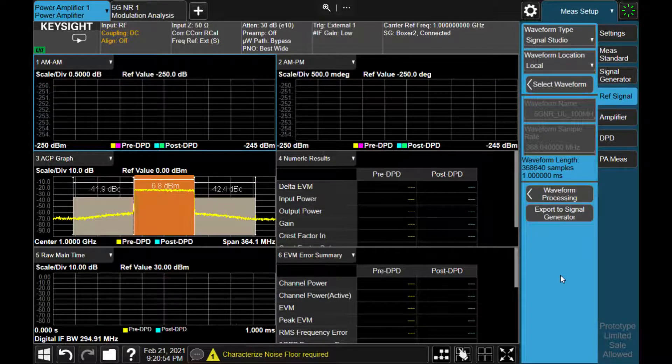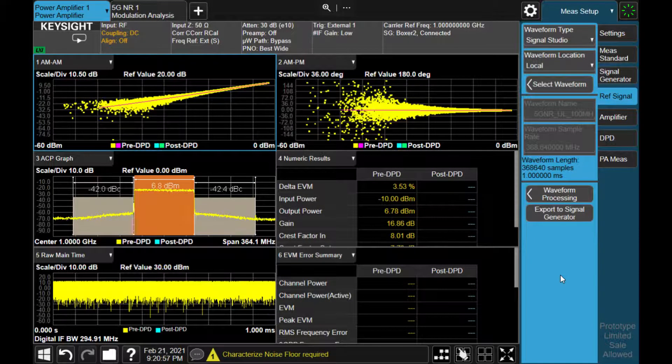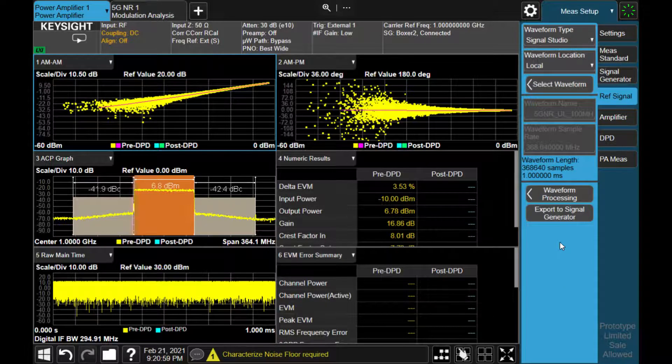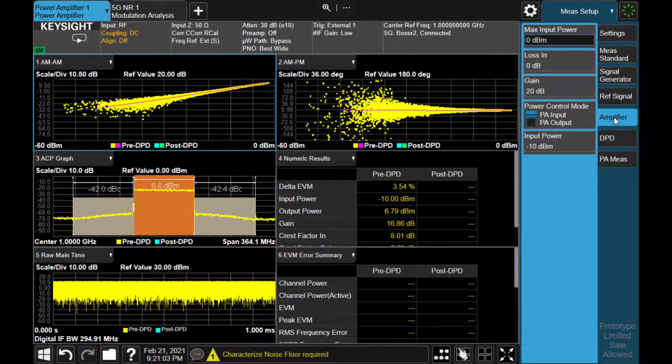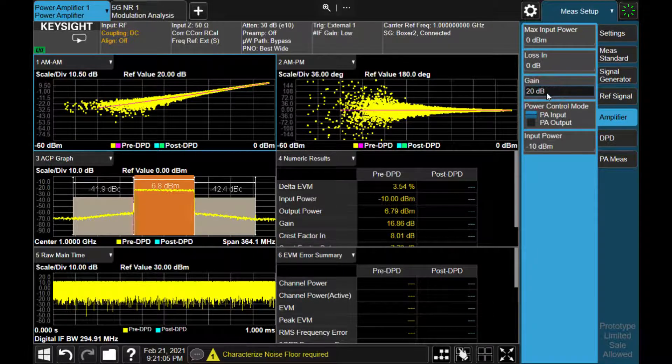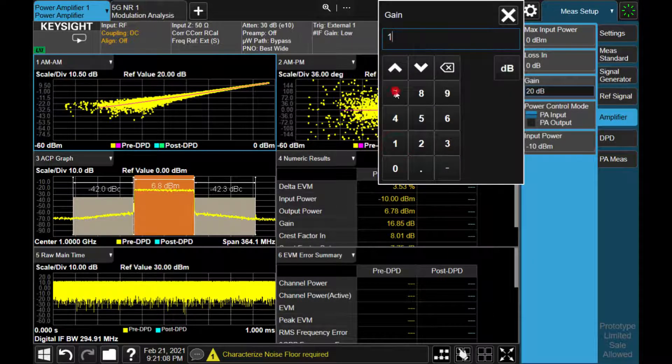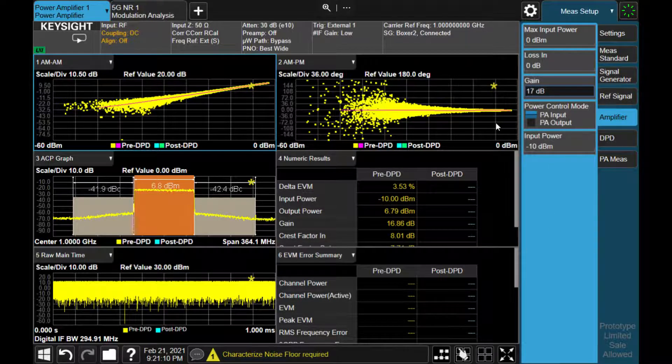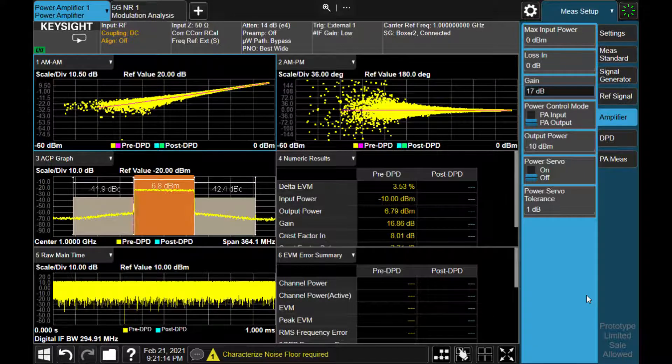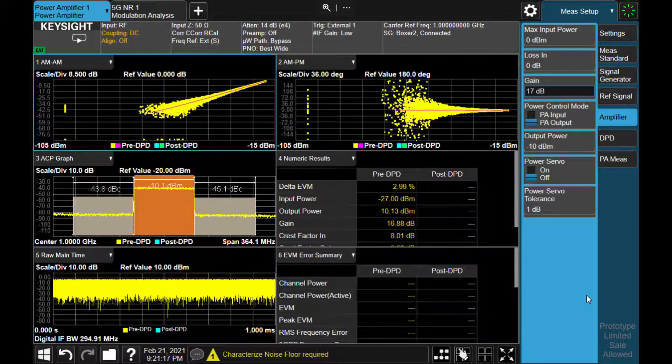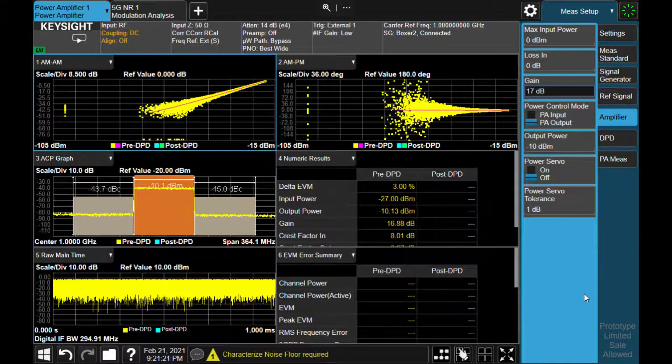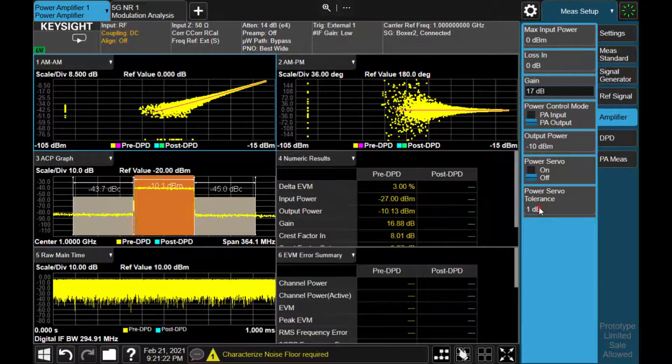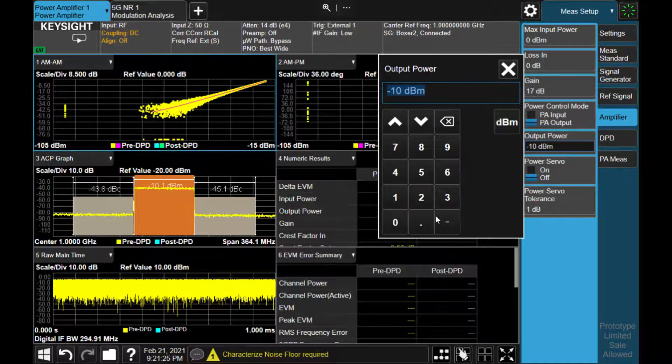So the measurement will automatically start, and now we are making the AM-PM measurement as well as the ACP measurement. So next step is to set up the PA prefire output and gain and those configured to set the power level. So now we set the power control mode to the PA output. And now the PA output is set to minus 10 dBm, and that's a linear region. So the ACP looks pretty clean. The ACP is minus 43.8 dB.